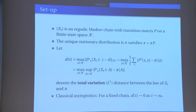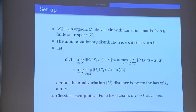We measure distance to stationarity in several ways, but the most important one is the total variation distance. This has multiple equivalent definitions — it's half the L1 distance. The total variation distance between two measures is the maximum over all sets in the state space of the probability under one measure minus the other. So D(t), the distance at time t, is the maximum over starting states and over subsets of the state space of the probability of being in A minus the stationary probability of A.